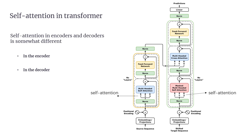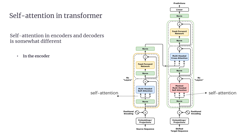Let's discuss self-attention in encoders and decoders in detail. This mechanism plays a key role in both parts of the model, but it works slightly differently in each to serve specific purposes. In the encoder, self-attention is used to understand relationships and context across the entire input sequence. The encoder applies a standard self-attention mechanism, meaning each token can look at every other token in the input sequence, helping the model understand how tokens relate to one another even if they're far apart.